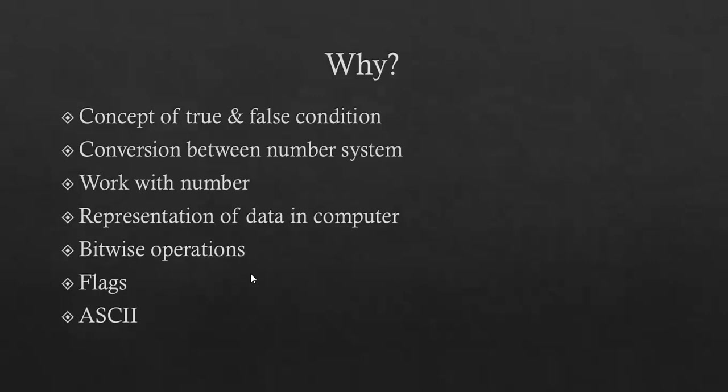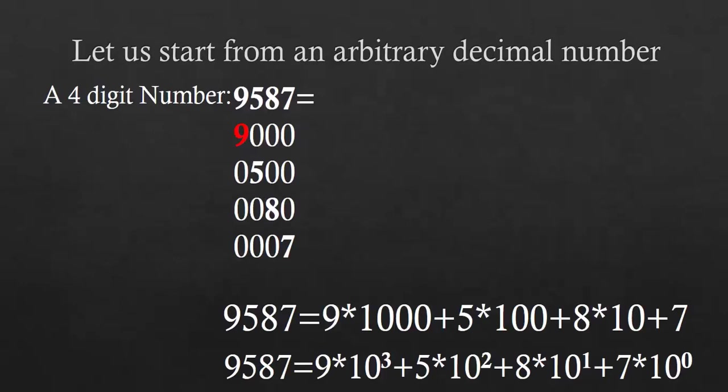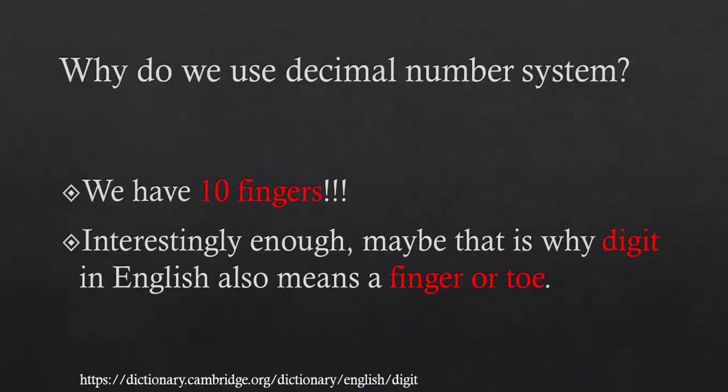We all use the decimal number system in daily life. Take a four-digit number: 9587. We can rewrite it as 9 times 10 to the power 3, plus 5 times 10 to the power 2, plus 8 times 10 to the power 1, plus 7 times 10 to the power 0. This is the construction of a decimal number.